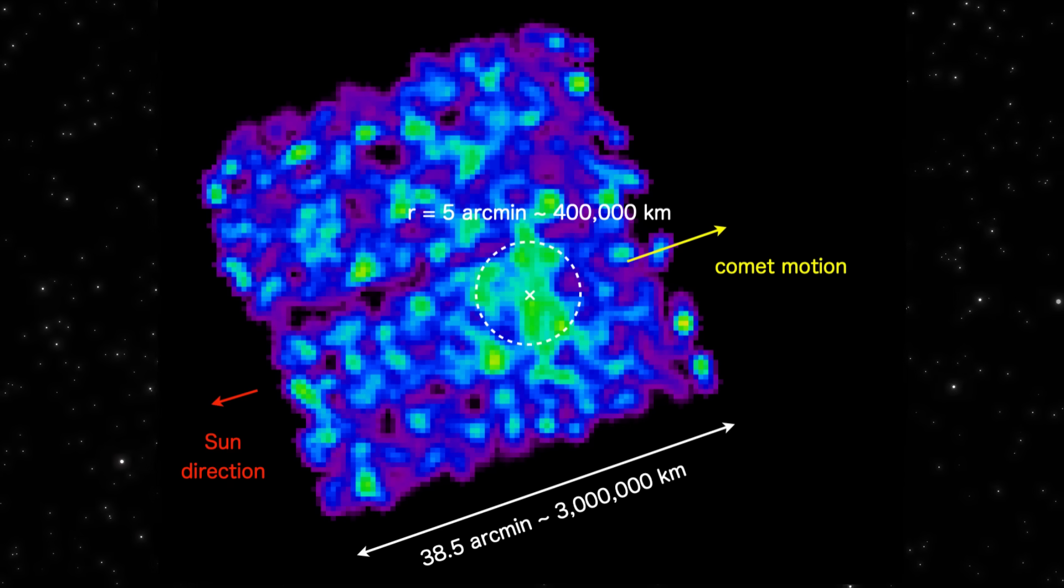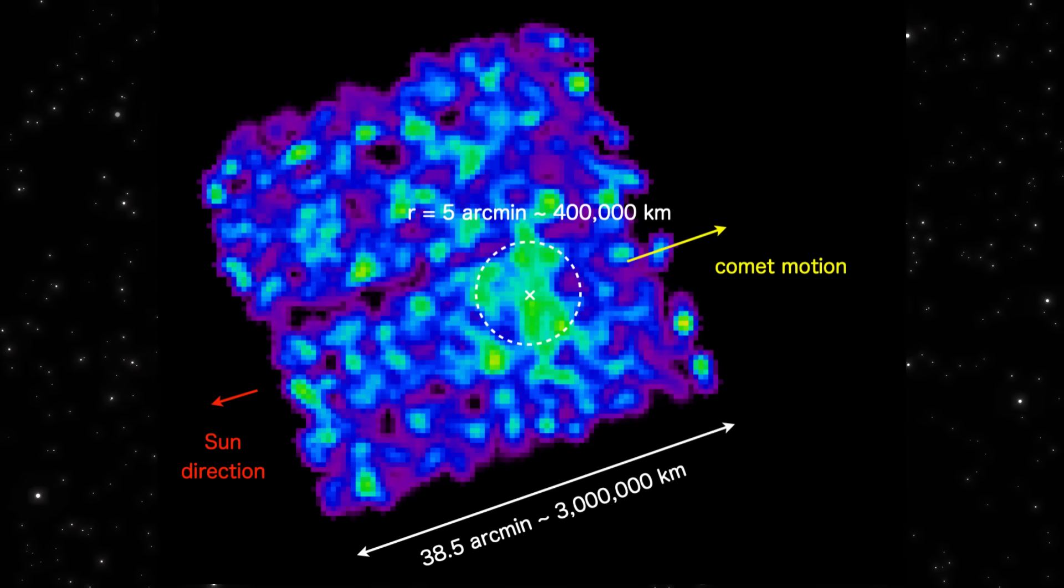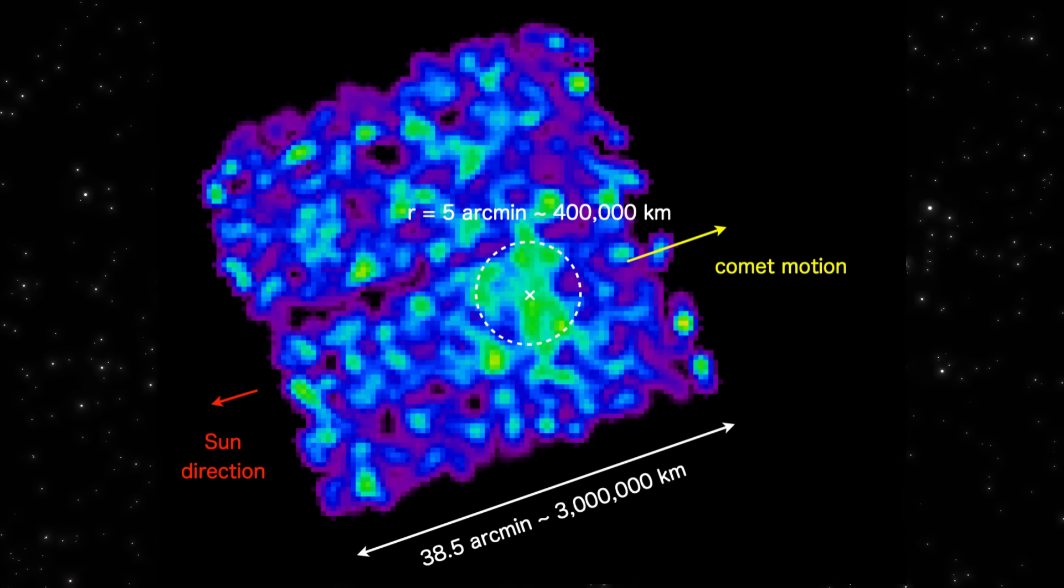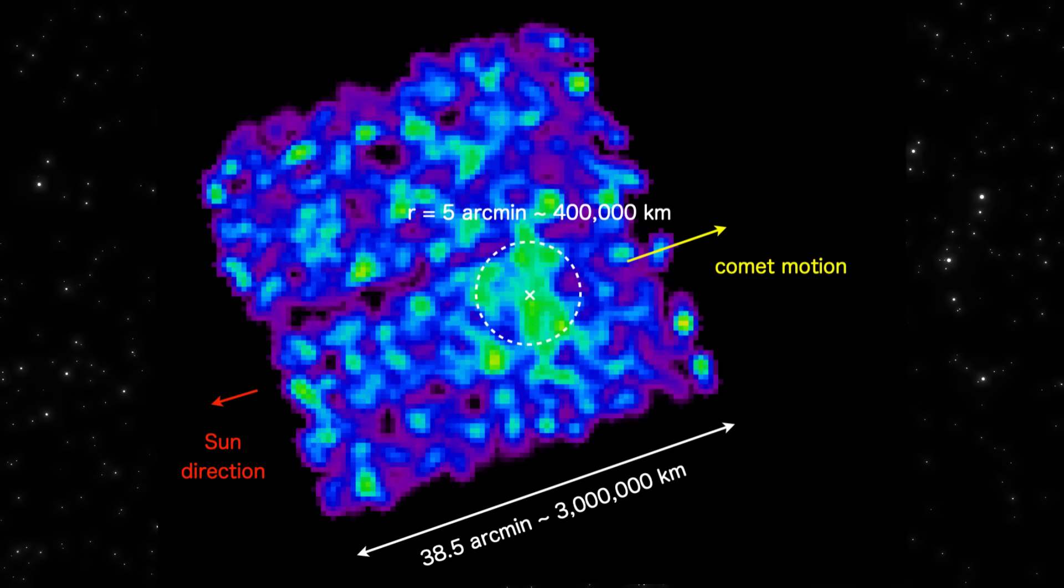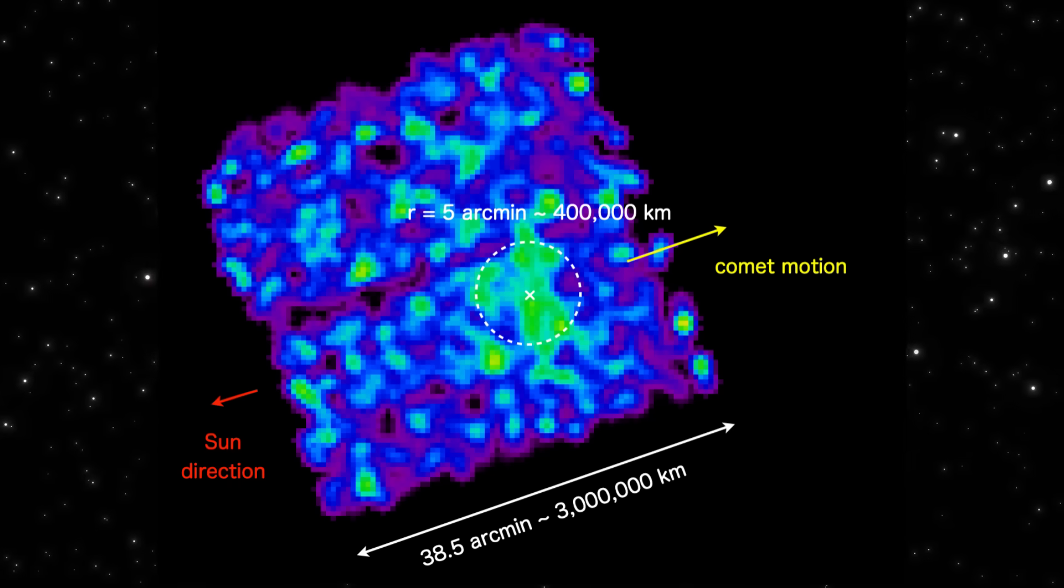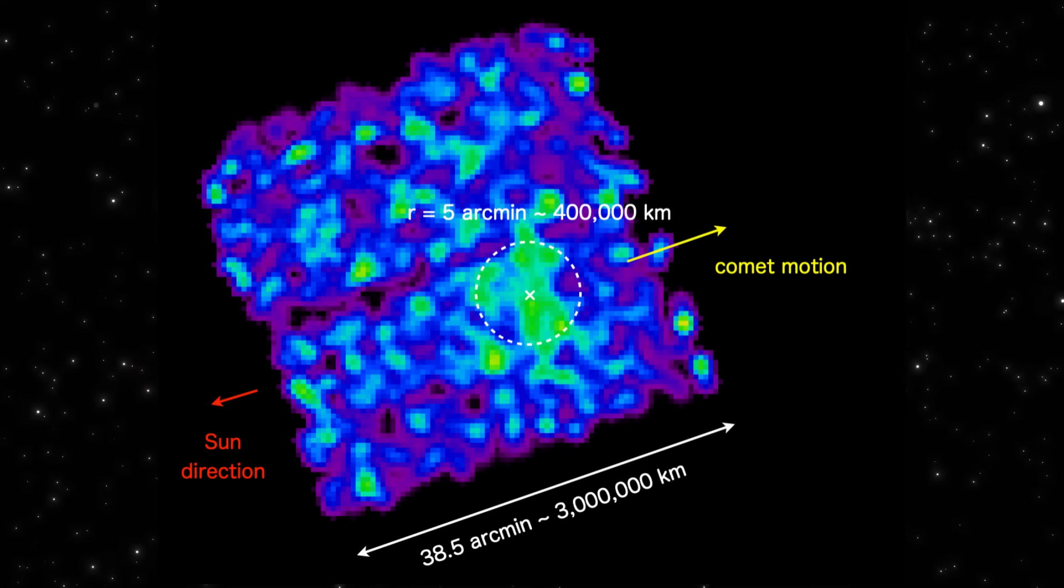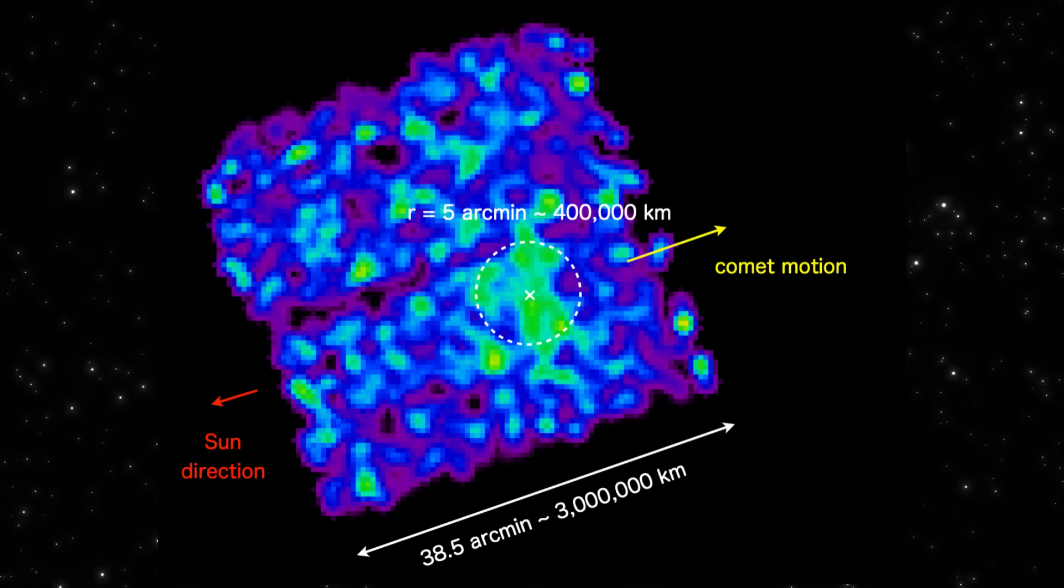XRISM picked up an X-ray halo nearly 400,000 kilometers wide—basically Earth-to-Moon distance—and an even larger diffuse structure stretching close to 3 million kilometers across. For an interstellar comet, that's absurd.